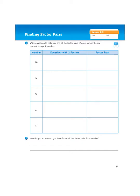It says, write equations to help you find all the factor pairs of each number below. Use dot arrays if needed. So the basic premise of this activity is this: A product is the combination of two factors being multiplied together. And so if you look at any given number as a possible product, the question then becomes, how many different ways can you multiply two numbers together to get that product?